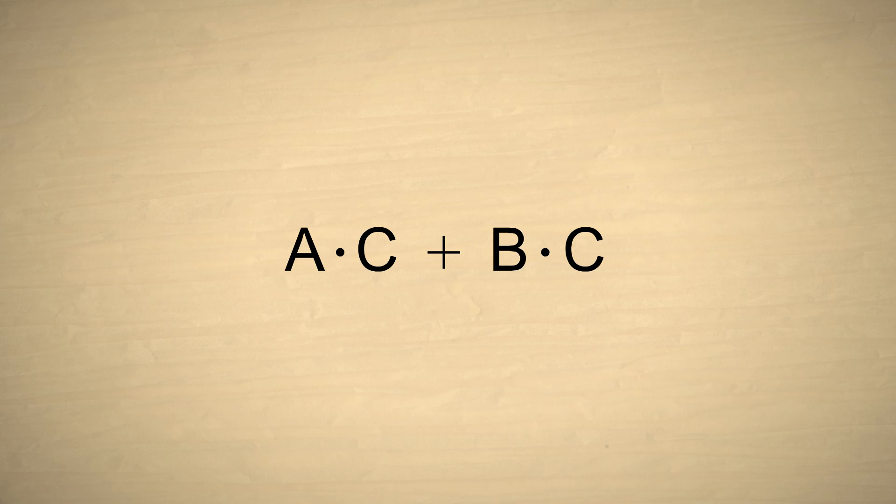We can also use the distributive property in reverse. If we have two numbers, A and B, which are both multiplied by C and then added, then we can group these two products in parentheses and move the common multiplier C outside of the parentheses. Of course, because of the commutative property, the multiplier could be placed either before or after the parentheses.